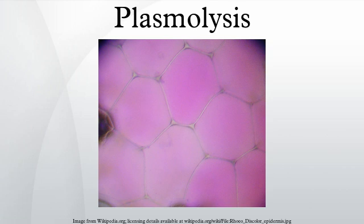Plasmolysis can be of two types: concave plasmolysis or convex plasmolysis. Convex plasmolysis is always irreversible, while concave plasmolysis is usually reversible.